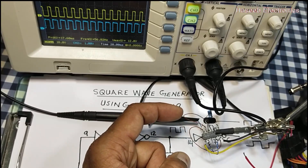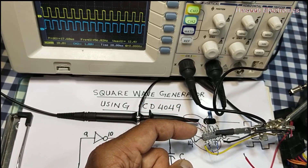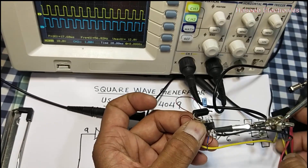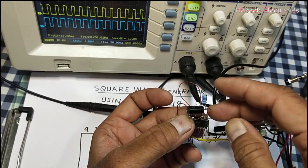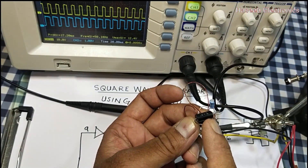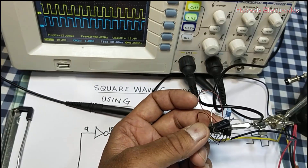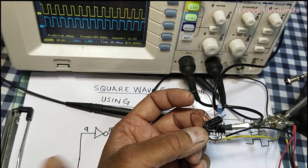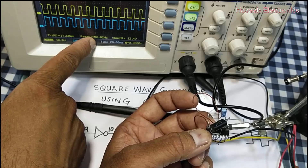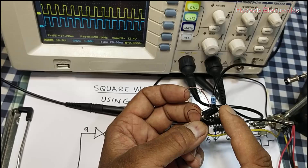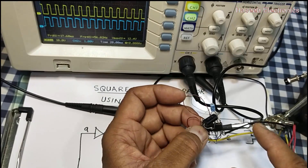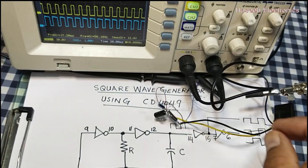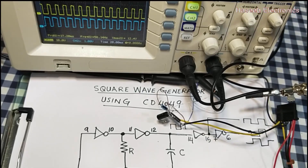Electrolytic capacitors do not have a good frequency response, so for accurate results we should use a fixed-value capacitor with minimum tolerance. To summarize: with 1 megaohm the frequency is 0.58 hertz, with 100 kilohms it is 5.8 hertz, and with 10 kilohms it is 58 hertz. We can also use a variable resistor to tune the frequency. This circuit is very simple and useful for any project. Thanks for watching — assalamualaikum warahmatullahi wabarakatuh.